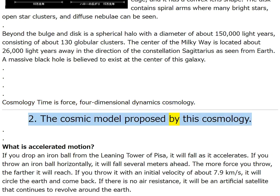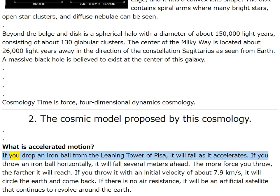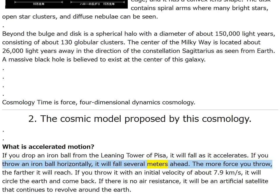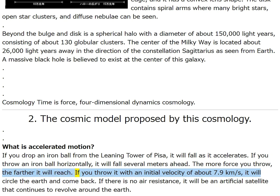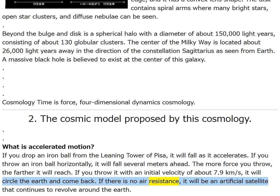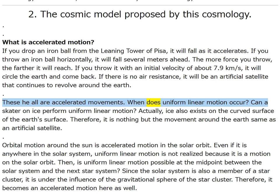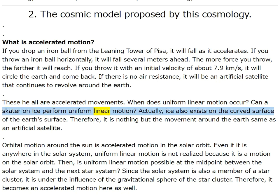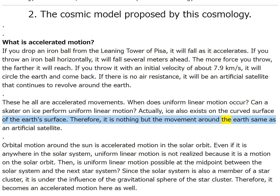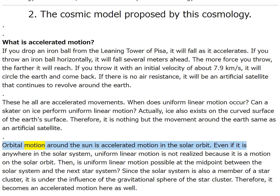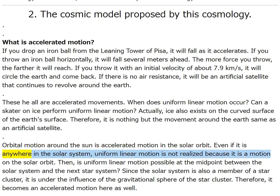Two: the cosmic model proposed by this cosmology. What is accelerated motion? If you drop an iron ball from the Leaning Tower of Pisa it falls with acceleration. Thrown horizontally it falls several meters ahead; with initial velocity of about 7.9 km/s it orbits Earth as an artificial satellite. A skater on ice is actually moving on the curved surface of Earth — orbital motion around the sun is accelerated motion. Even at the midpoint between the solar system and the next star system, uniform linear motion is not realized — the solar system is in a star cluster under gravitational influence.